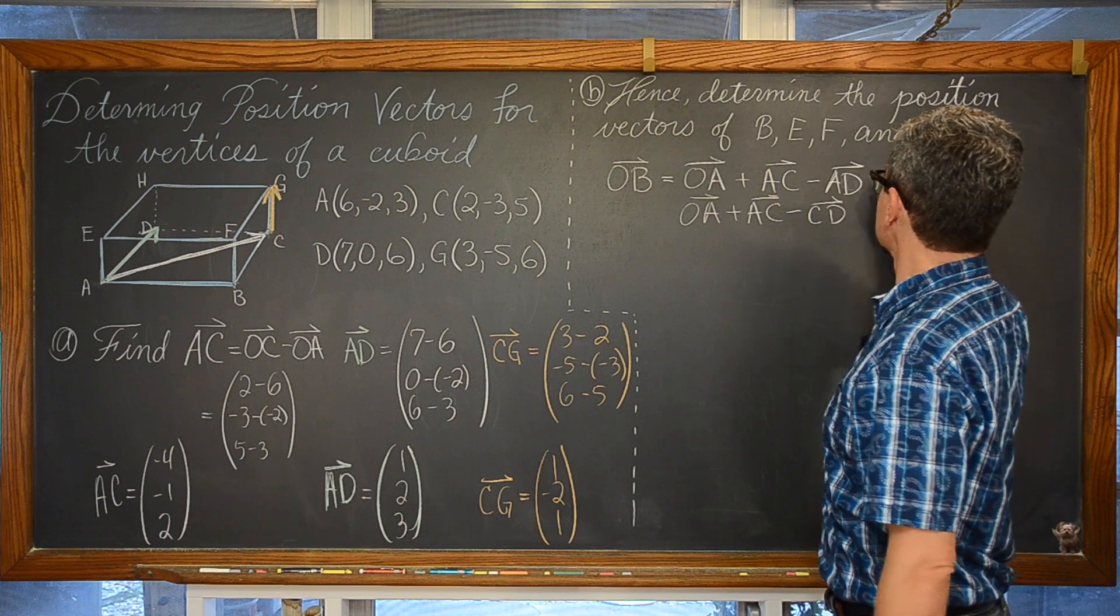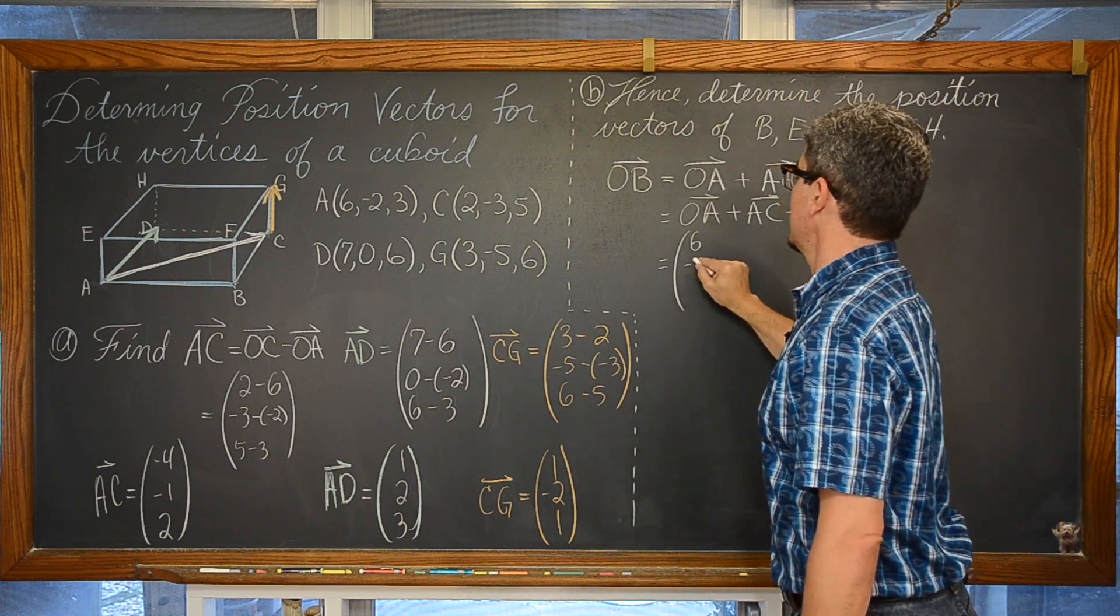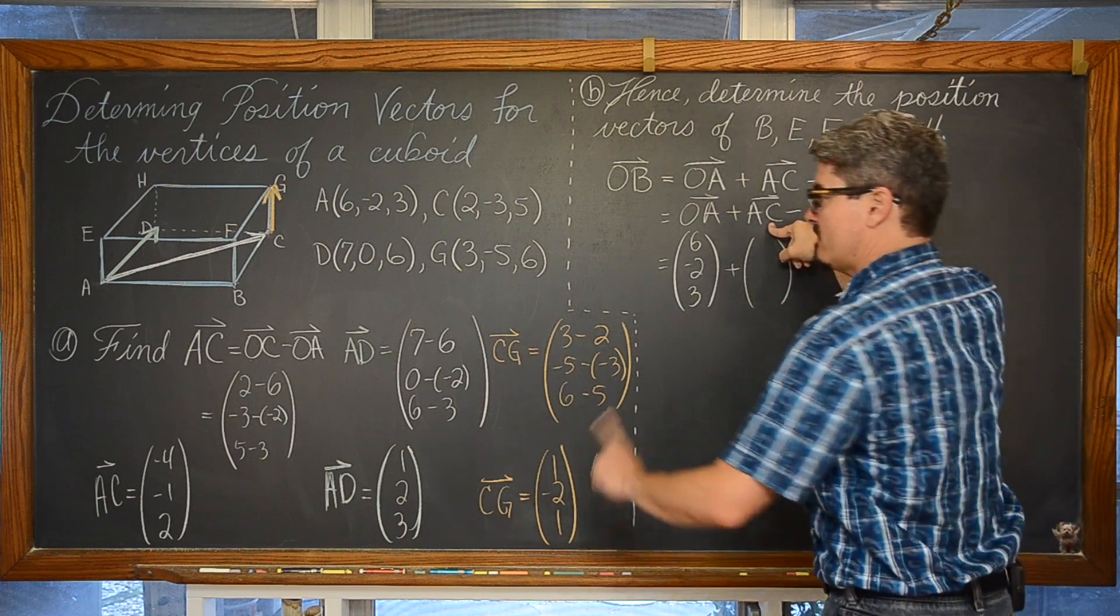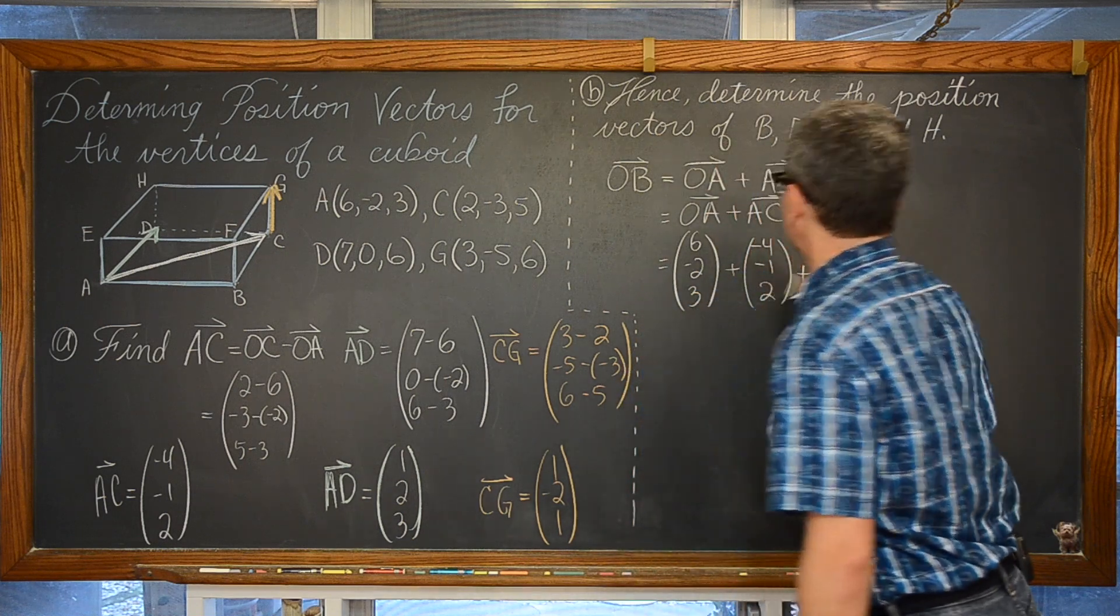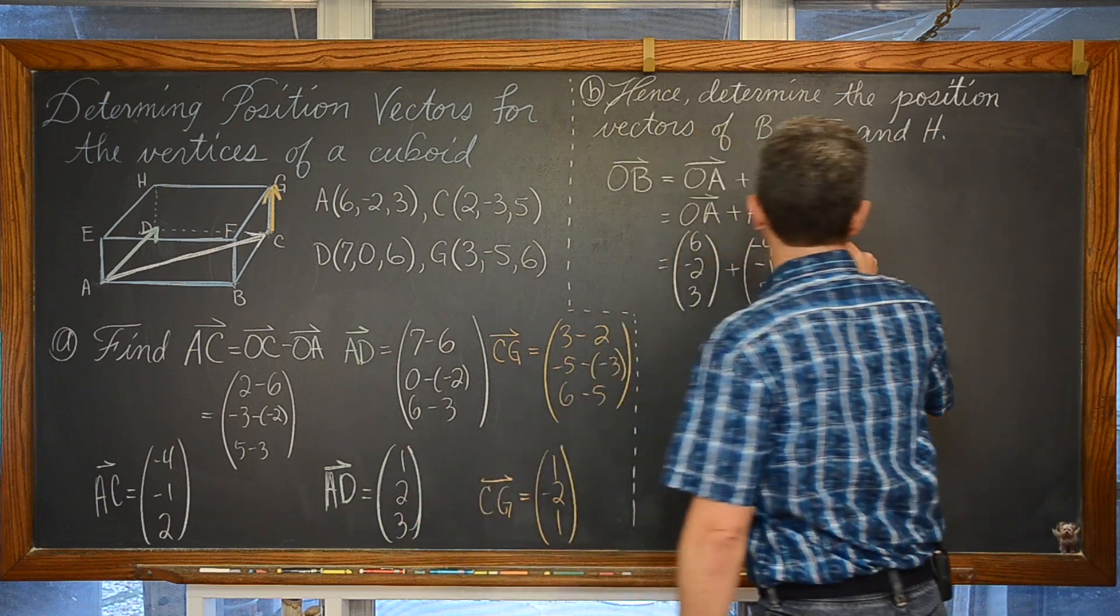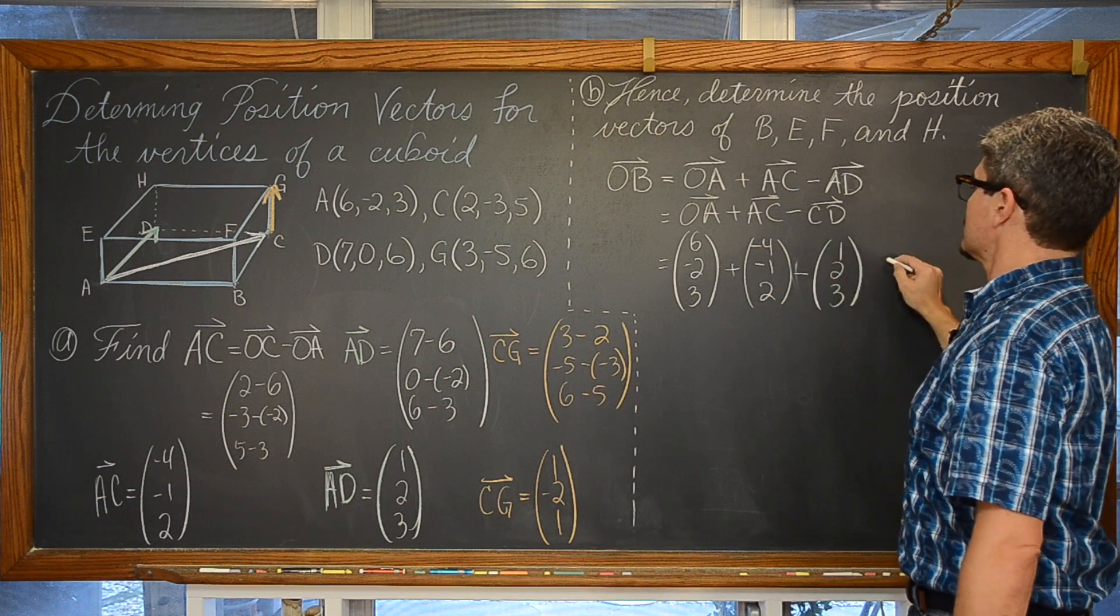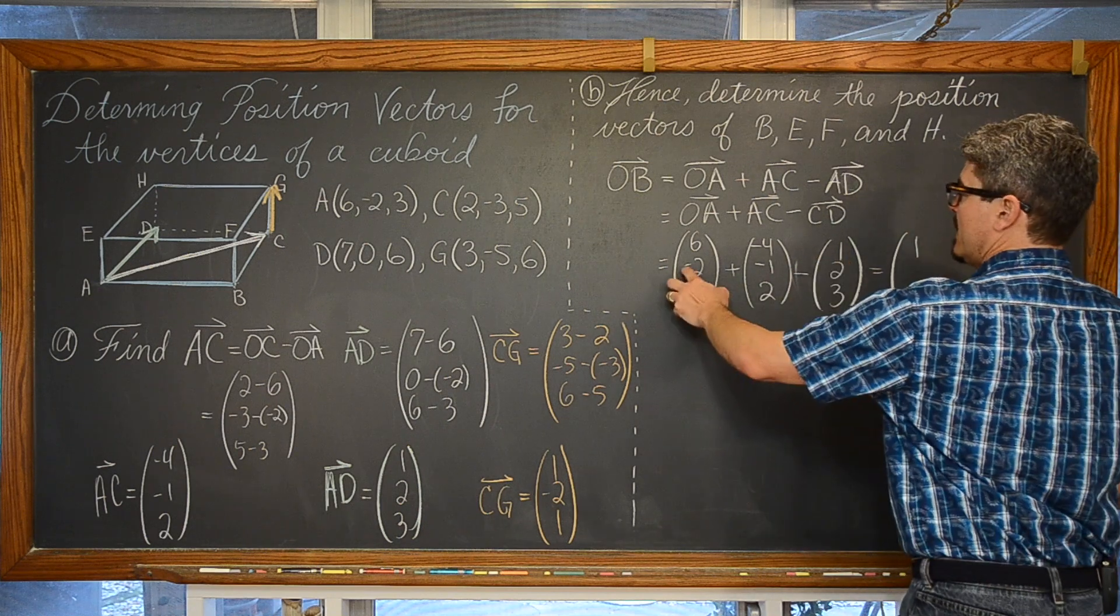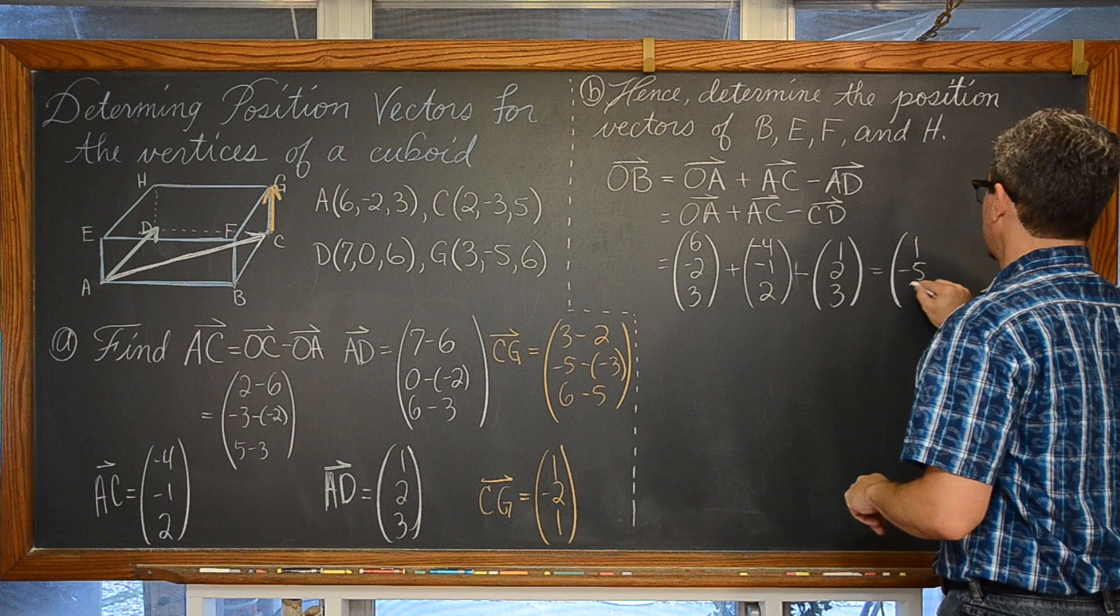And that is going to be equal to, I am definitely going to run out of room as I do this example. Position vector for A, 6, negative 2, 3, x-axis, y-axis, z-axis movement. Vector AC, well we just found that. Vector AC is negative 4, negative 1, 2. And then finally subtract vector CD, which is the same as vector AD. Well AD is 1, 2, 3, so we are going to subtract vector CD, which is equivalent to AD. And all this comes out to, OB is equal to, 6 plus negative 4 is 2, minus 1 is 1, negative 2 plus negative 1 is negative 3, now minus 2 is negative 5, and 3 plus 2 is 5, minus 3 is equal to 2.